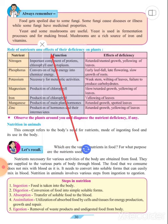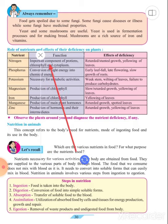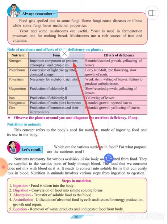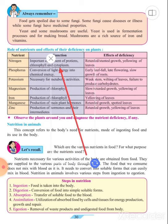Role of nutrients and effect of their deficiency on plants. We'll see the nutrients, function of that nutrient, and effects of deficiency. The first nutrient is nitrogen. The function is: important component of protein, chlorophyll and cytoplasm. Chlorophyll is necessary for photosynthesis and cytoplasm is a component of the plant cell.